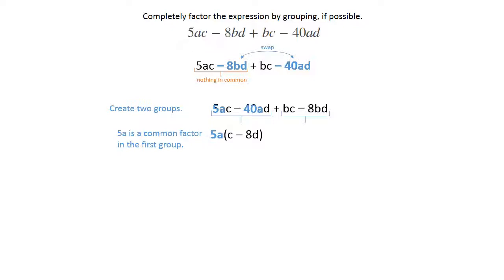In the second group, you've got B as a common factor. Take that plus B out, and you've got C minus 8D as remaining.